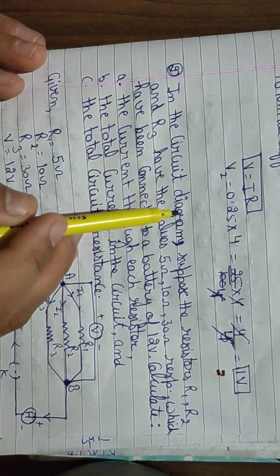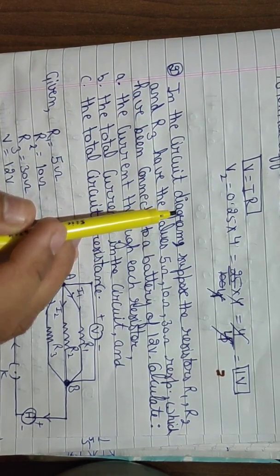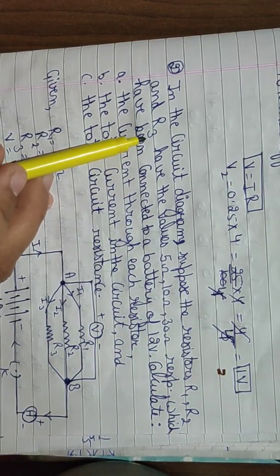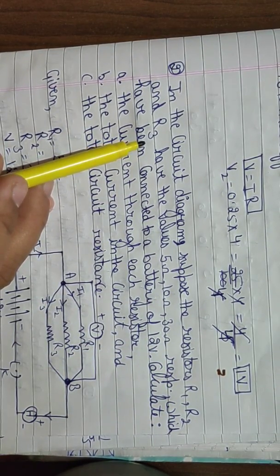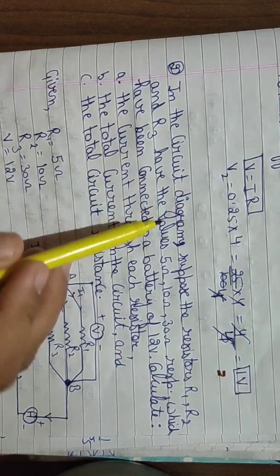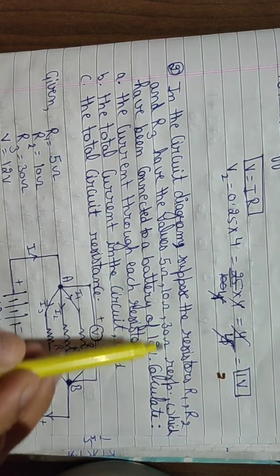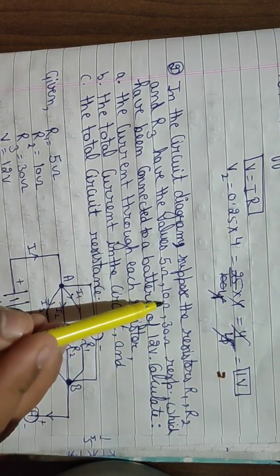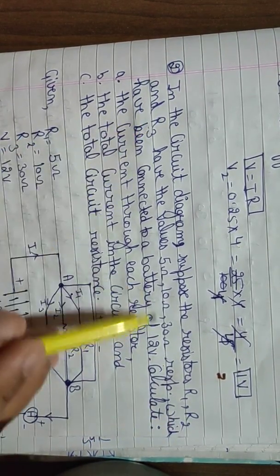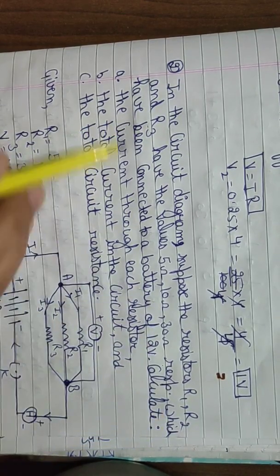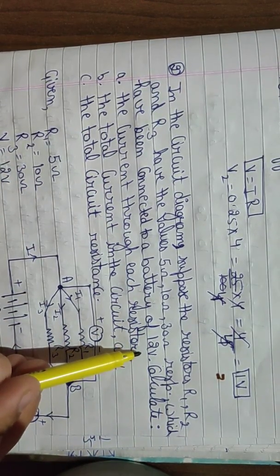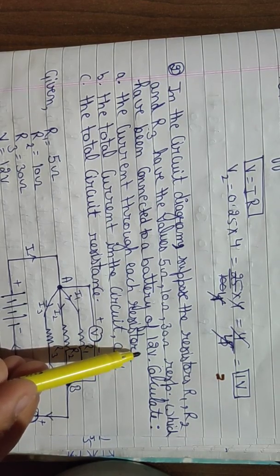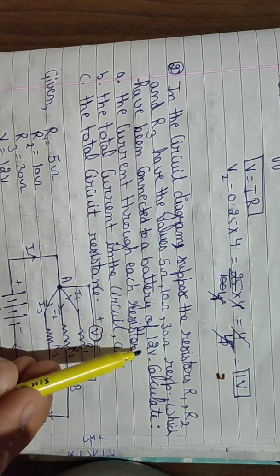The statement of the second numerical: In the circuit diagram, suppose the resistors R1, R2, and R3 have values 5 ohm, 10 ohm, and 30 ohm respectively. That means R1 = 5 ohm, R2 = 10 ohm, and R3 = 30 ohm. These three resistors are connected to a common battery of 12 volt, so the potential difference is 12 volt.